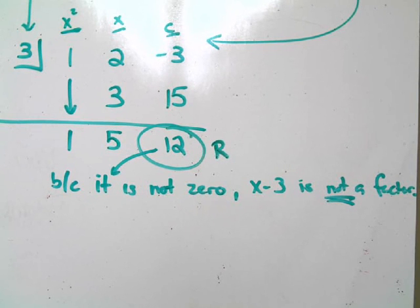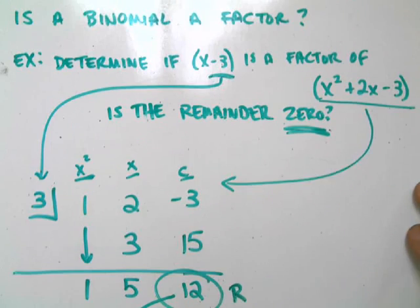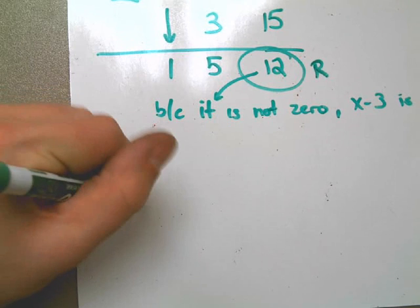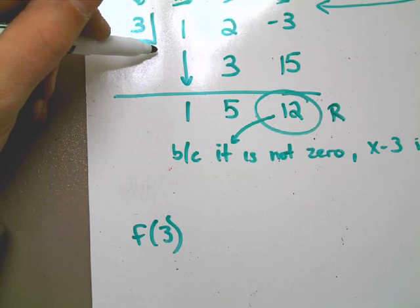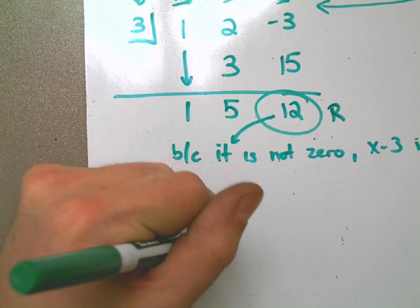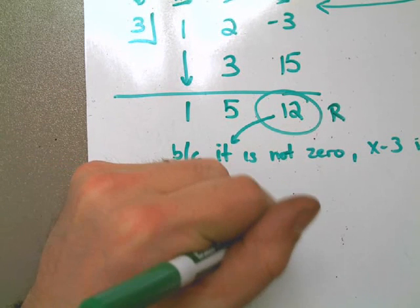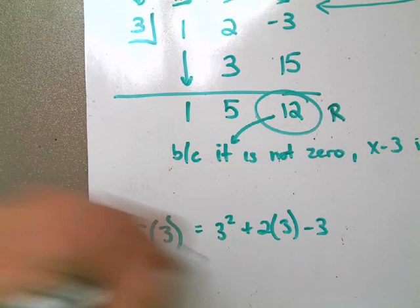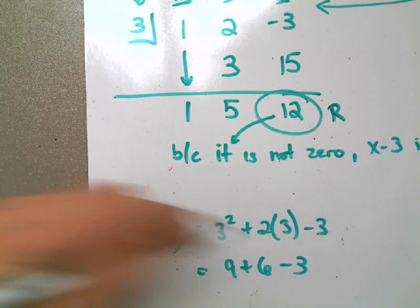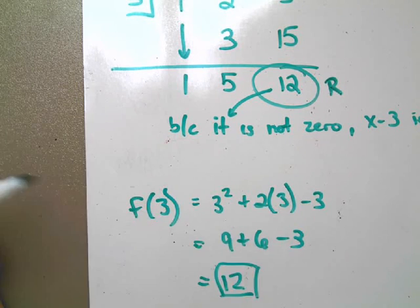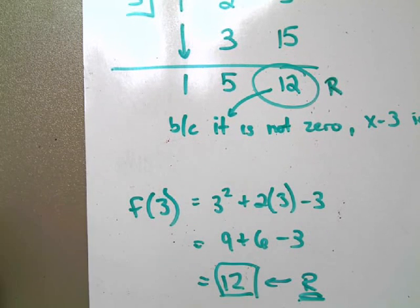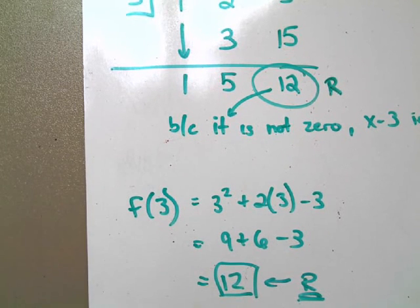I could also do synthetic substitution if I want to. I know that if I plug in to this equation, x squared plus 2x minus 3, if I plug in f of 3, the same number that I had here up above, that would give me 3 squared plus 2 times 3 minus 3, which would give me 9 plus 6 minus 3, which is 12. That is the remainder, which also tells us it is not a factor.